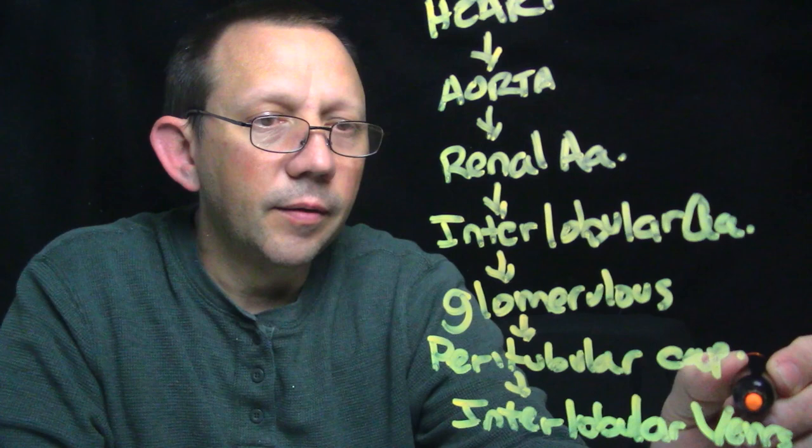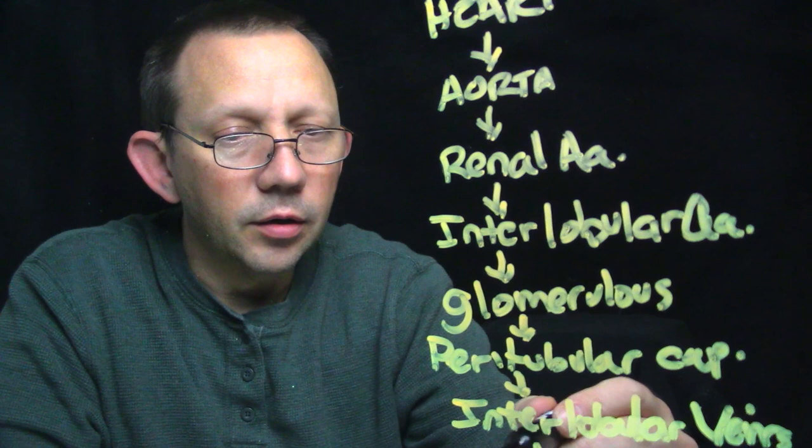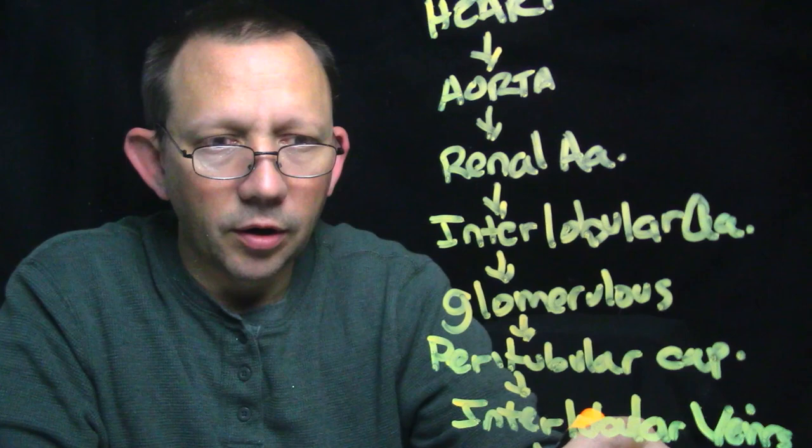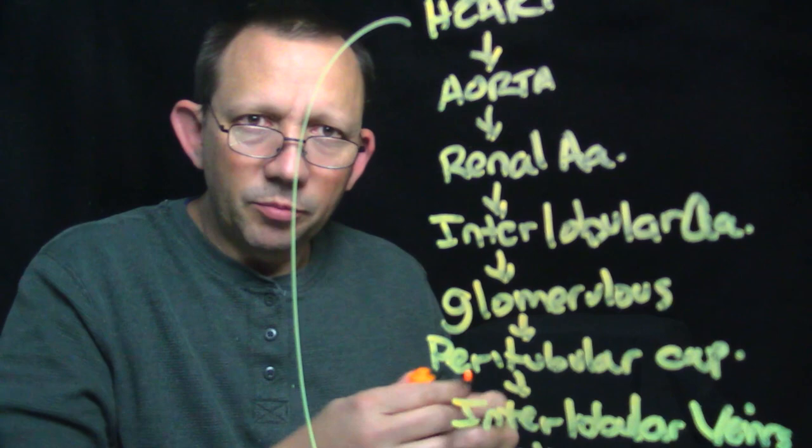From the peritubular capillaries we become the interlobar veins, then from there we go to the renal vein and eventually the vena cava and then back to the heart. So it's a cycle, of course — that's what it is. I couldn't write these small enough but let me go through that again real quick.